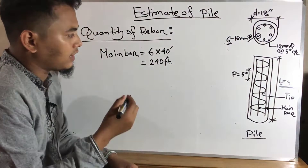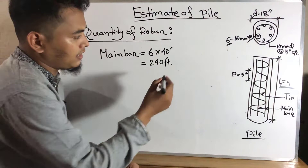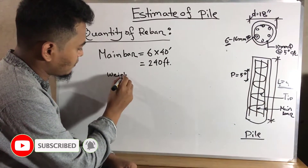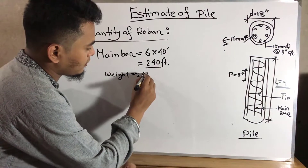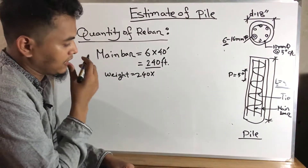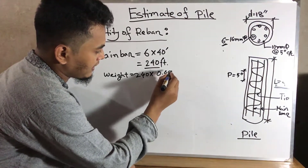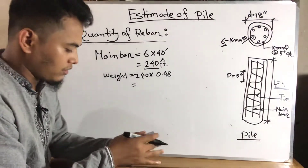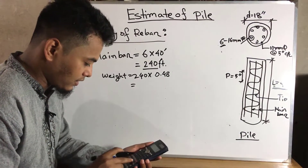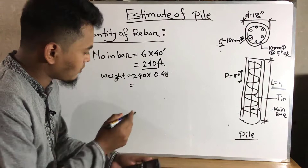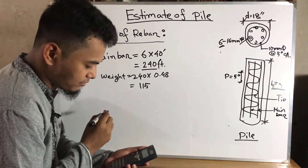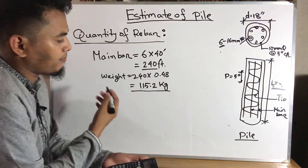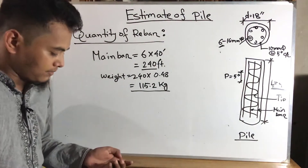We know the unit weight of a 16 mm diameter bar is 0.48 kg per feet. So total weight of main bar = 240 × 0.48 = 115.2 kg. This is the weight of the main bar.